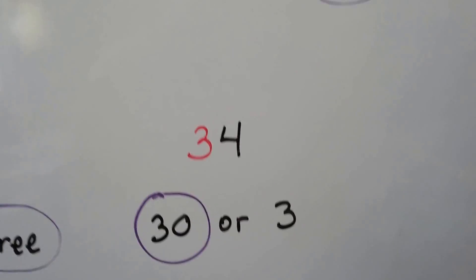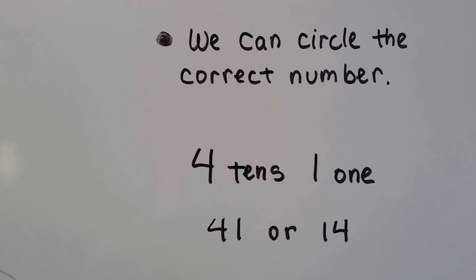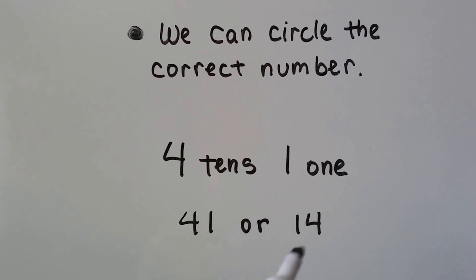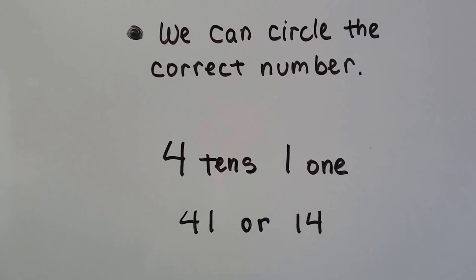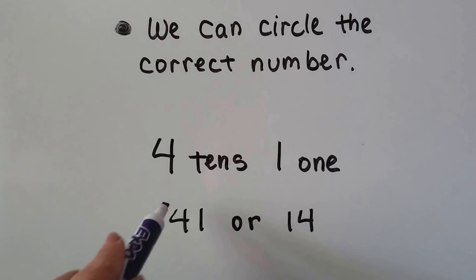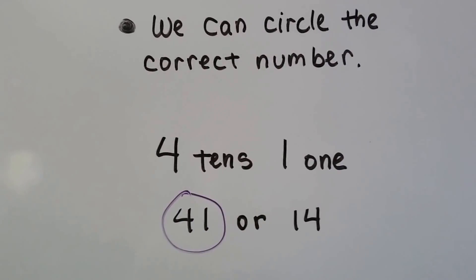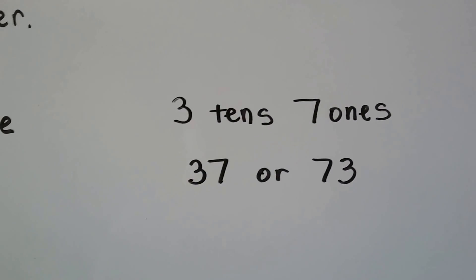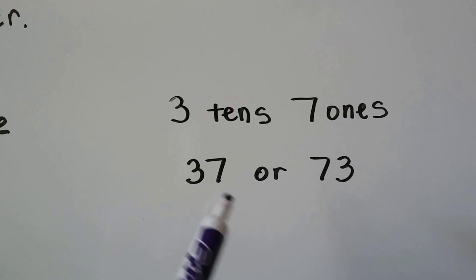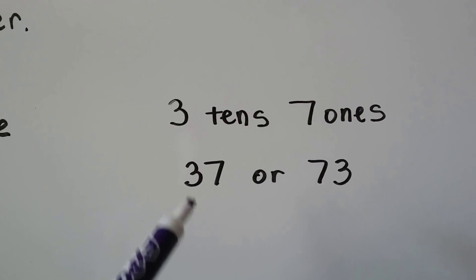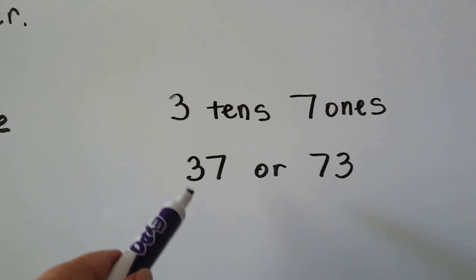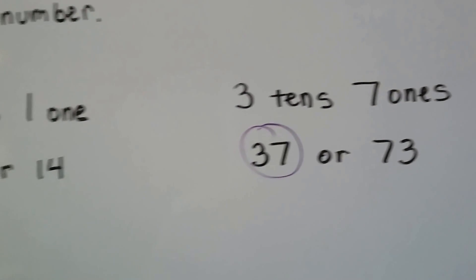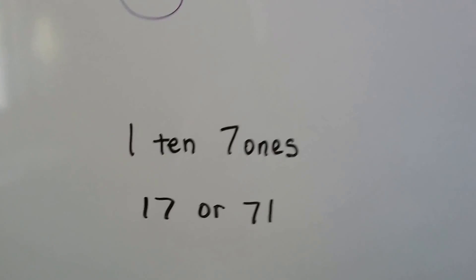How about this one — is this three a thirty or just a three? It's in the tens place, so it means thirty. If you said thirty, you're right. Now, if we have four tens and one one, which of these is the correct number? If you said this one, you're right. How about three tens and seven ones — is it this number or this number? Remember, this side is the tens place. If you said three tens and seven ones is this one, you're right.